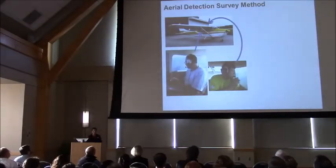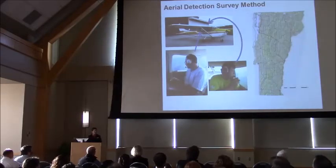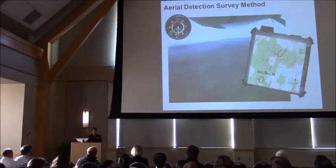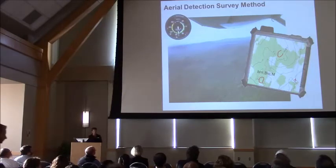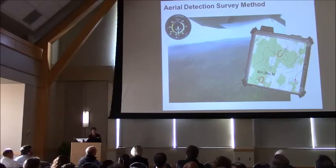The aerial detection survey method's pretty simple. There's two people in the back of a plane. We fly over the state every year at least once. And when you're going 100 miles an hour, it's everything you can see and sketch onto a topographic map, and we try to attribute it with what we think it is.